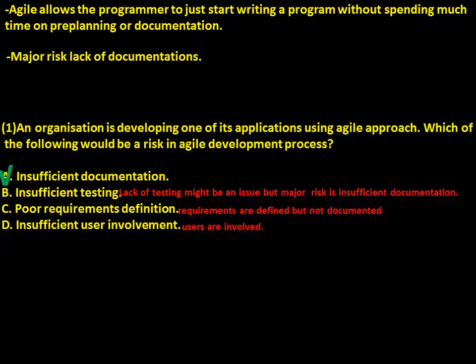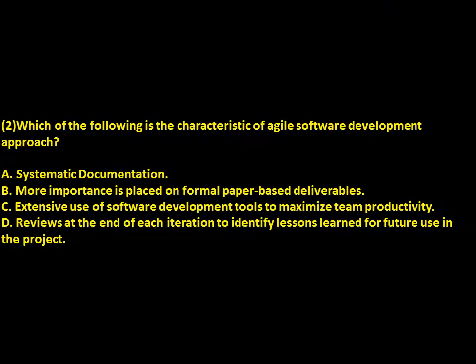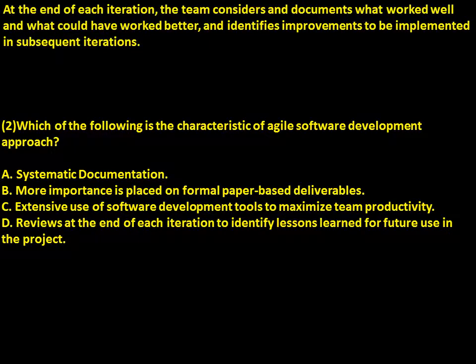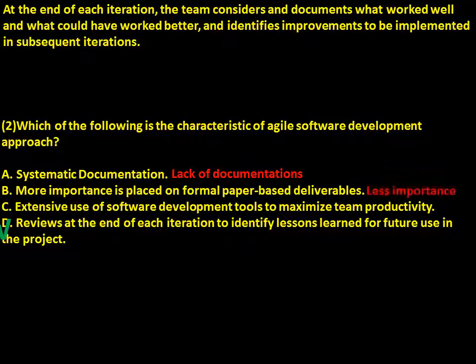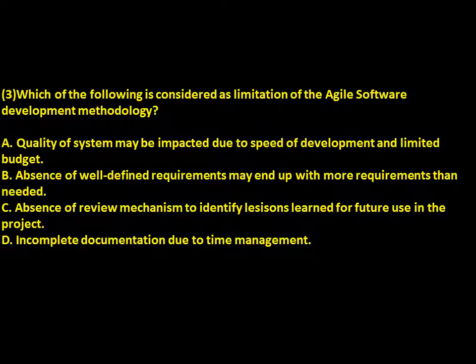Users are involved. Which of the following is a characteristic of the Agile software development approach? If you remember, we discussed that at the end of each iteration, learnings are being documented. So our answer is: in Agile there is lack of documentation — less importance is placed on formal paper-based deliverables. Which of the following is considered a limitation of the Agile software development methodology?